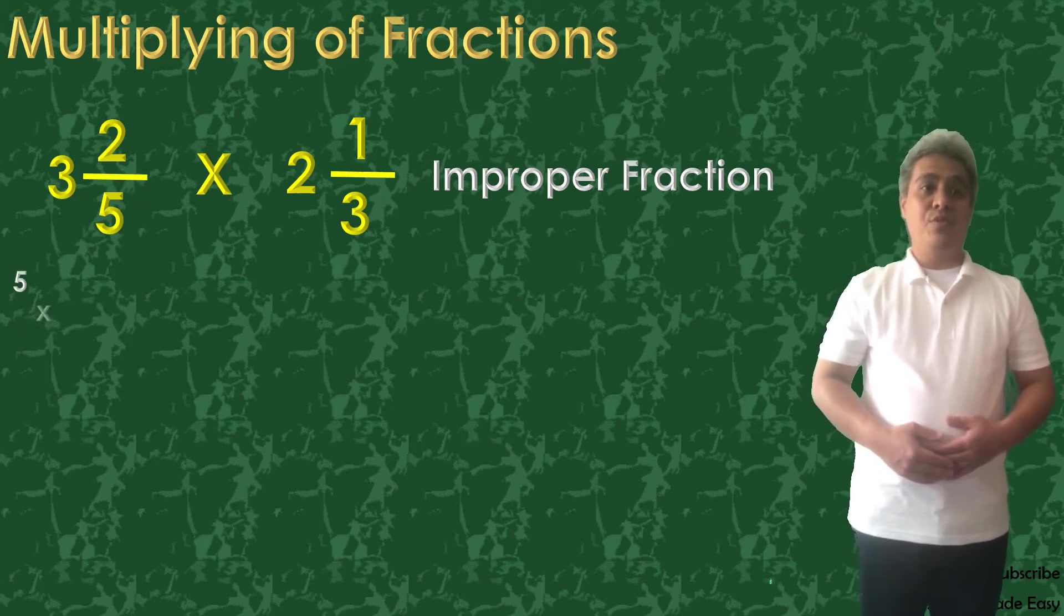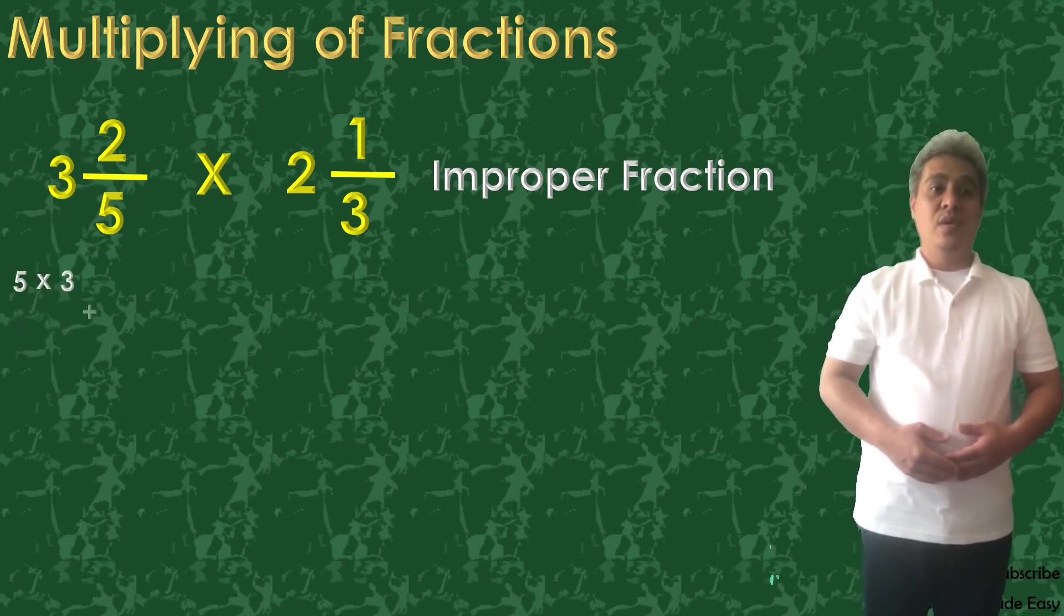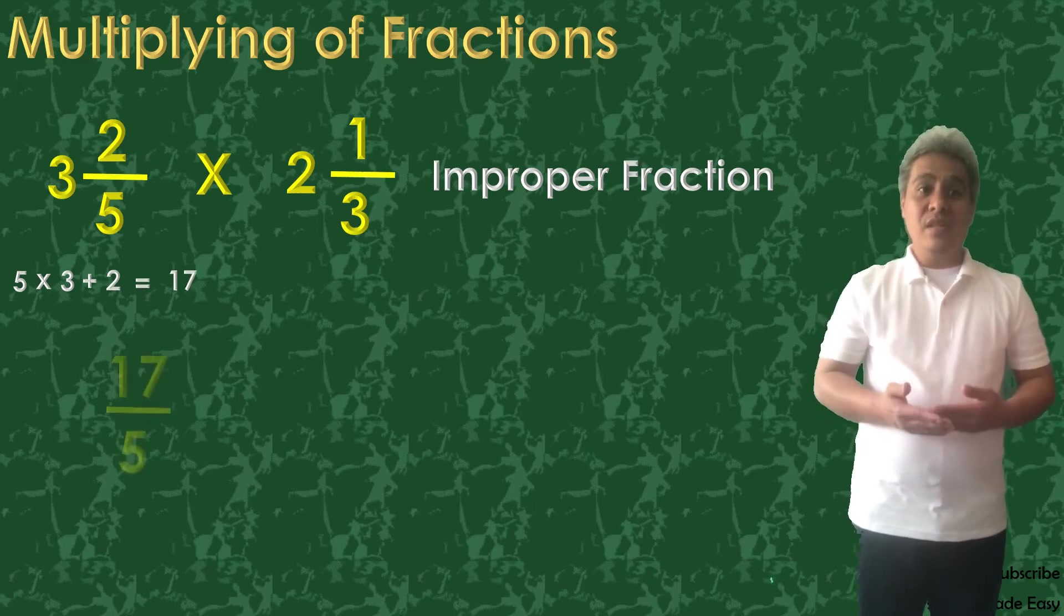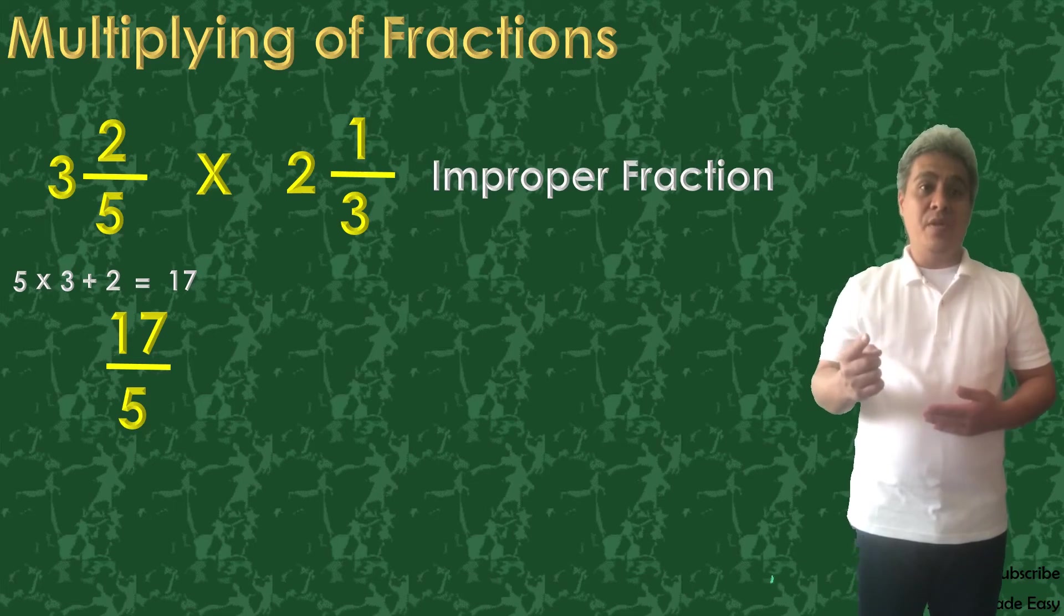5 times 3 plus 2 is equal to 17. 17 will be our new numerator and copy the denominator, 5.